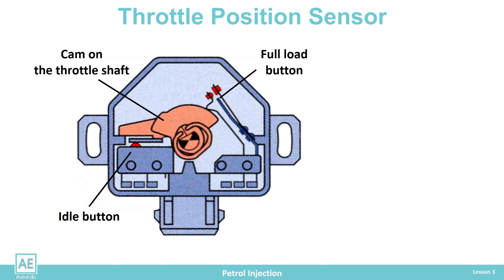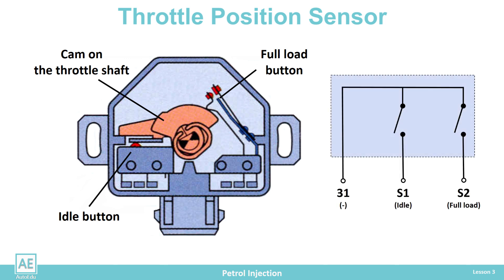When the throttle is in the idle position, the cam is in the home position and one button is pressed. The control unit receives a signal from the first button while the second is open. Most often, minus power is sent to the computer as information that the engine is currently in idling mode.